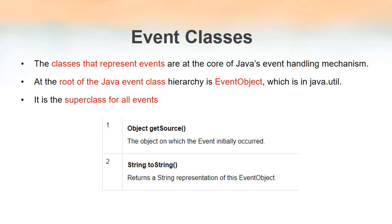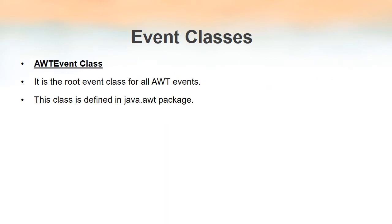In the EventObject class there are two methods: getSource and toString. The getSource method is used to get the source which generated the event — if you want to know the source that generated the event, you can use getSource. The toString method is used to get the string representation of the event object, that is the details of the source that generated the event in the form of a string.